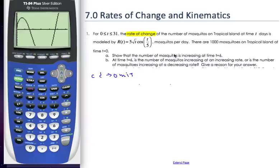Now if I want to show that the number of mosquitoes is increasing at time t equals 6, well, this is my derivative already.